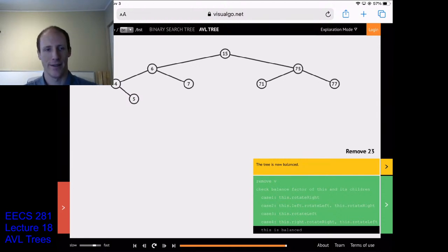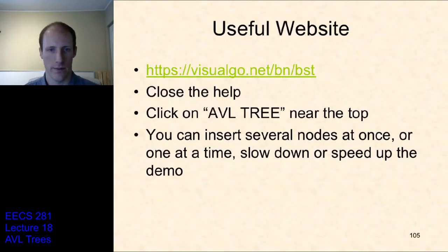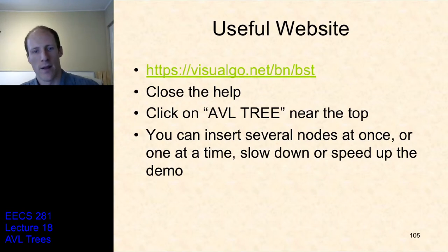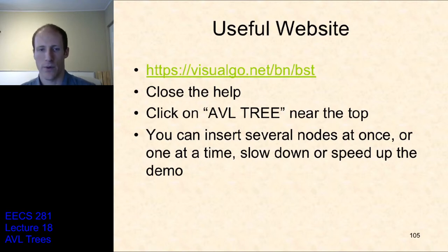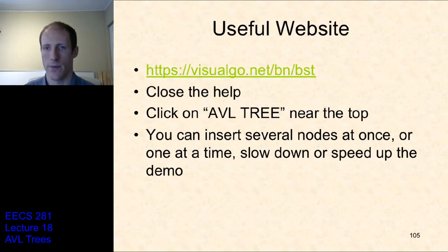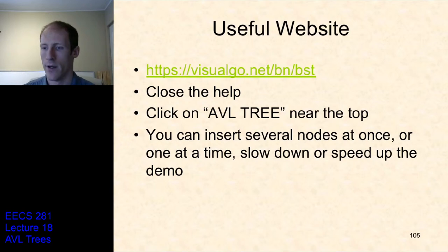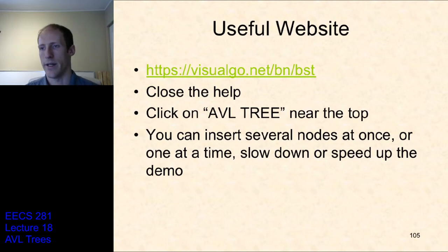I would encourage all of you to go to this website — visualgo.net/bn/bst — and try playing around with it. It's a useful resource for learning about binary search trees and AVL trees. It's helpful because it's so visual. When you're writing out the algorithms for rotations, it can be hard to remember exactly what to do, but if you have a picture in your mind, that can really help. Have a good day everyone, don't forget to vote, and I'll see you on Thursday to talk about graphs.